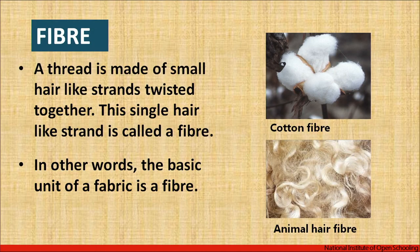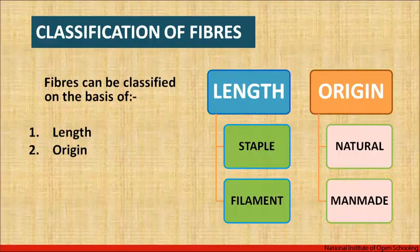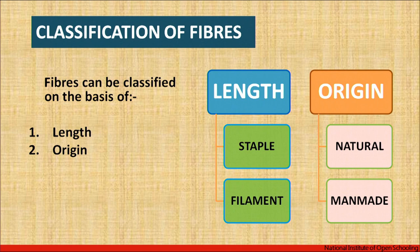In this video we will be discussing about the fibers in detail; the rest of the videos would be discussing about yarns and fabric. A fiber is a thread made up of small hair-like strands twisted together. This hair-like strand is called a fiber. Fiber is the basic unit of any fabric.